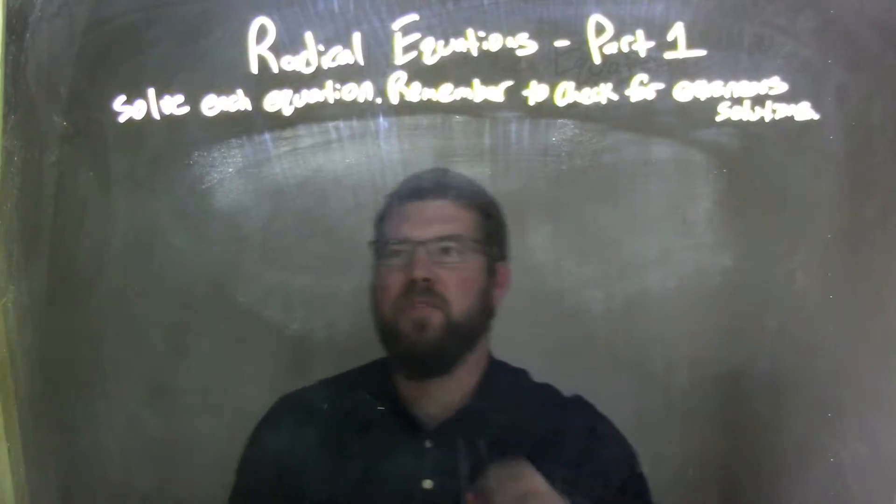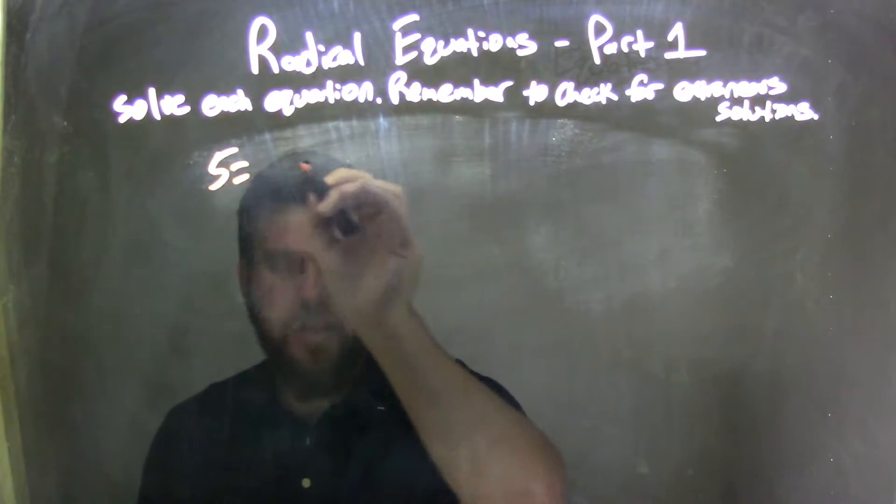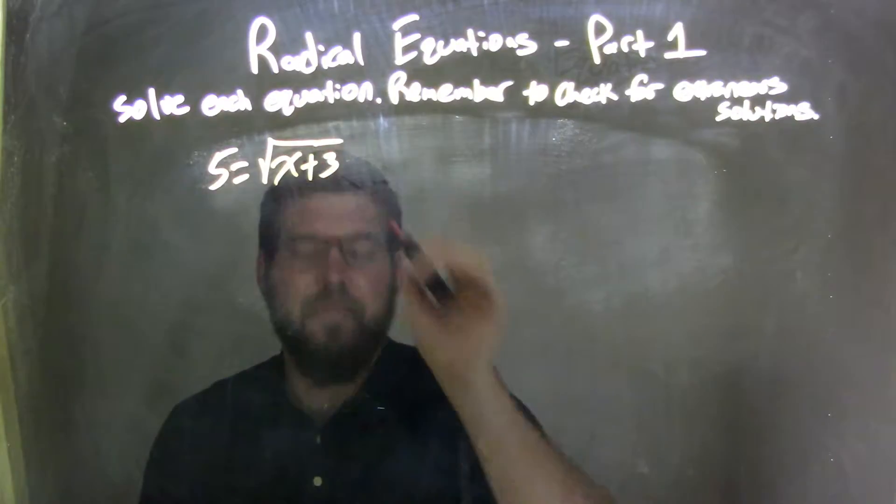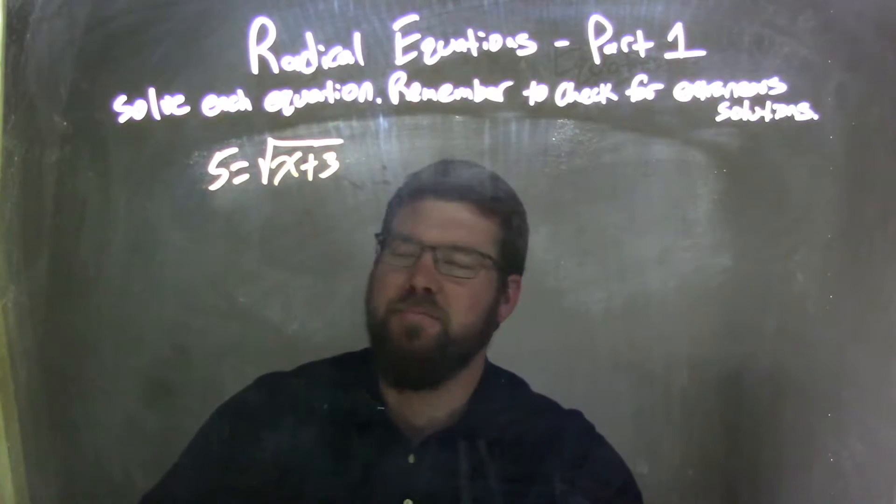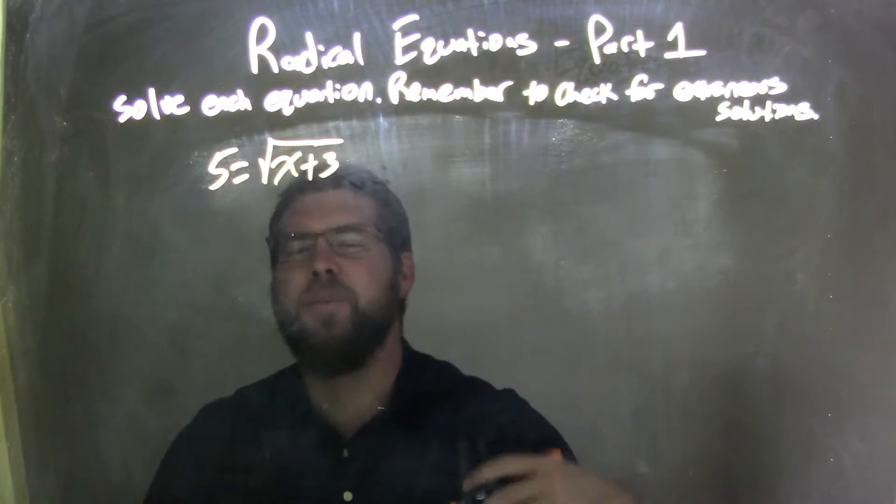So, if I was given this equation, 5 equals the square root of x plus 3, that's it. I know I made it sound like I was having something else there.